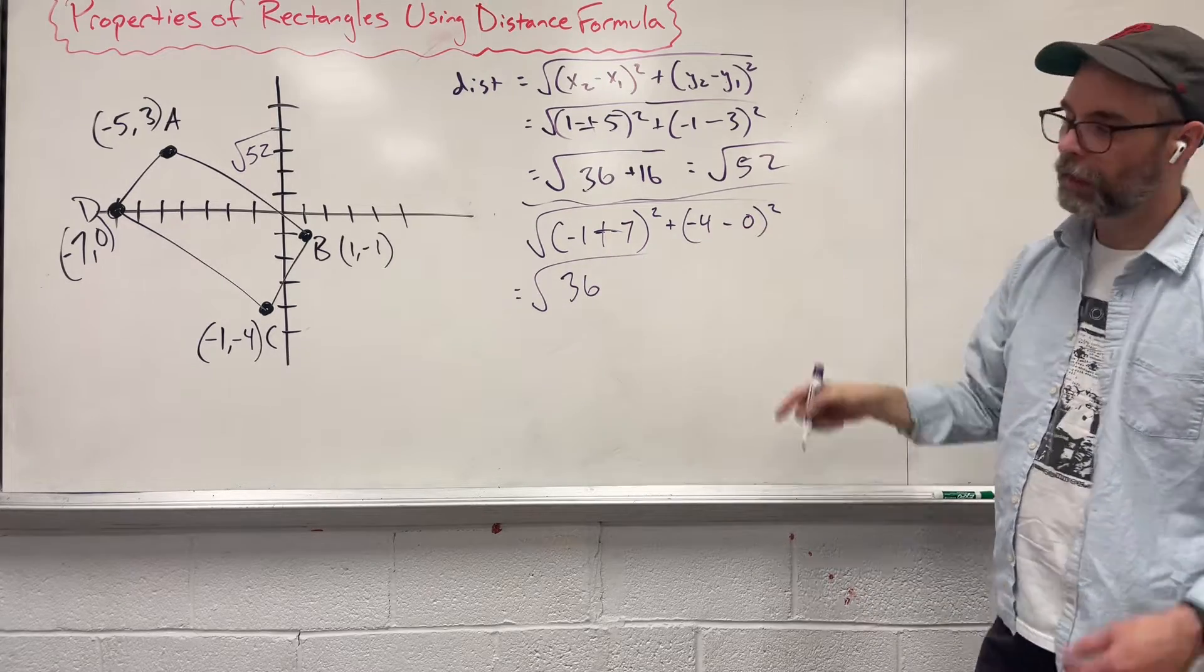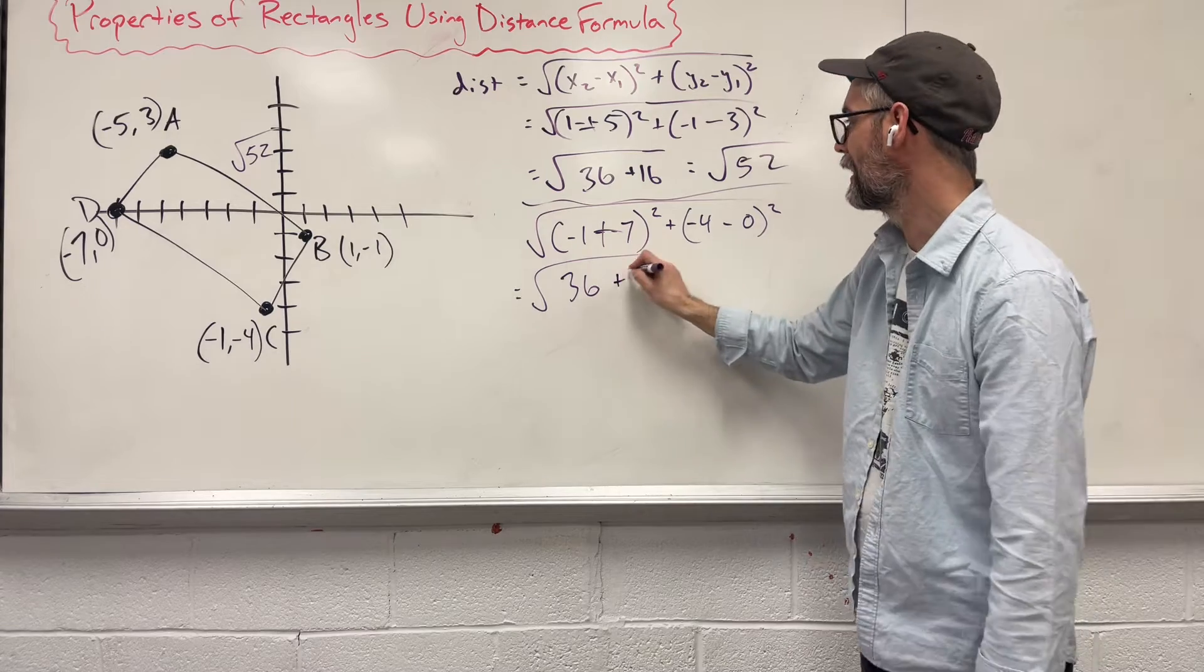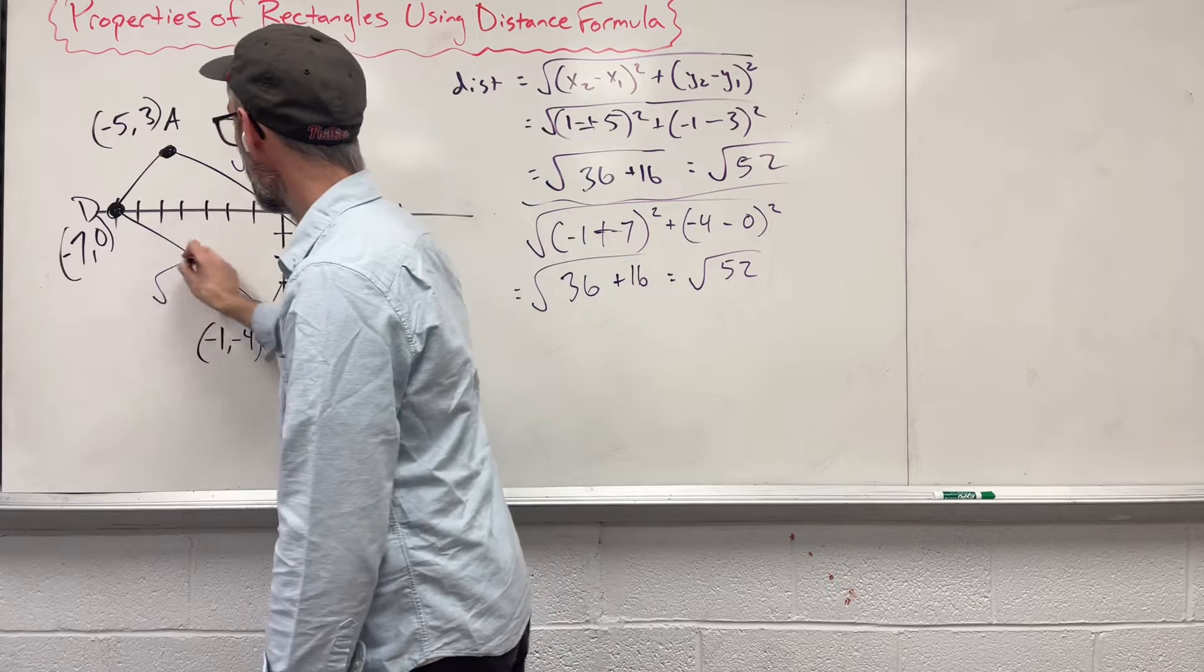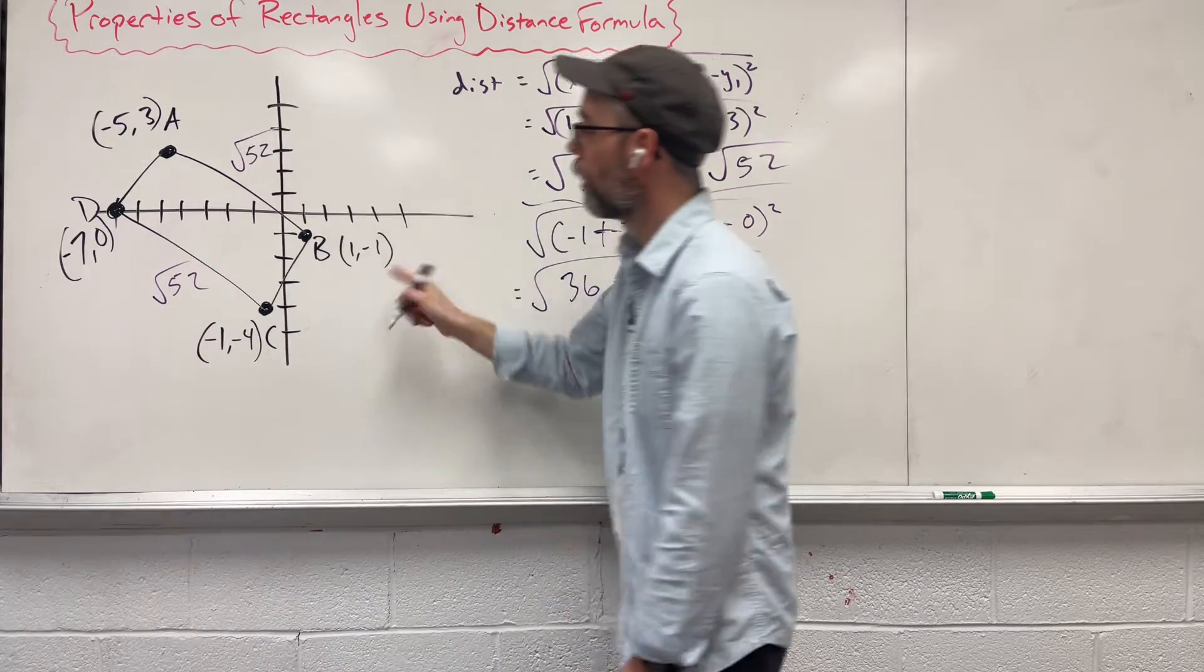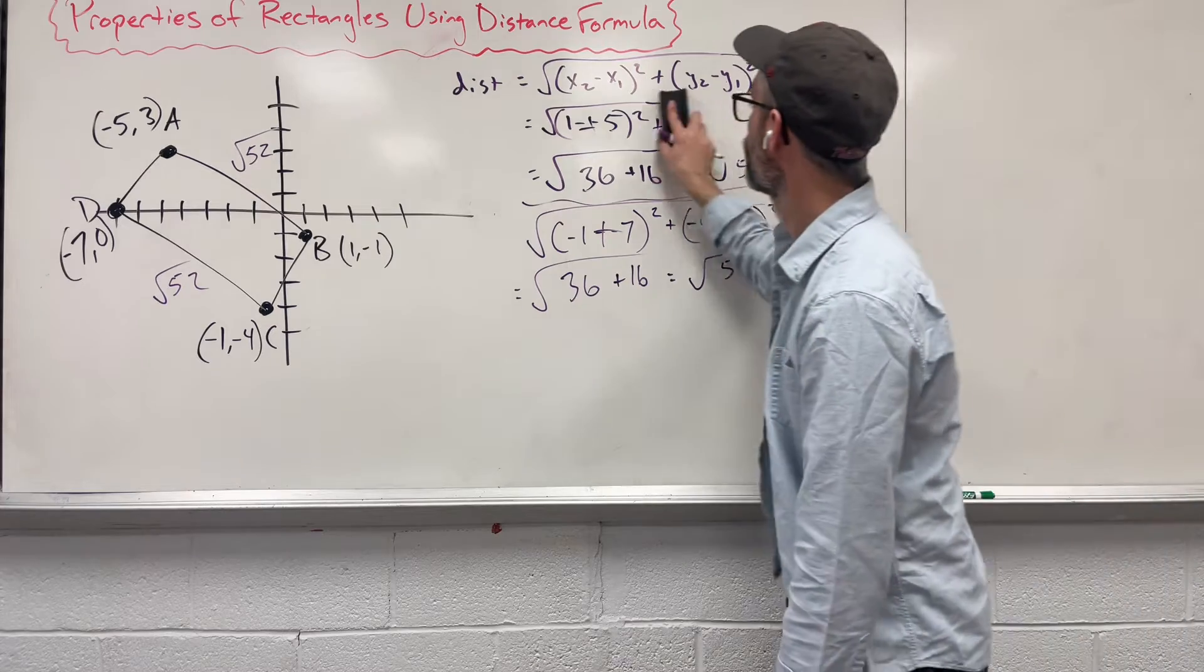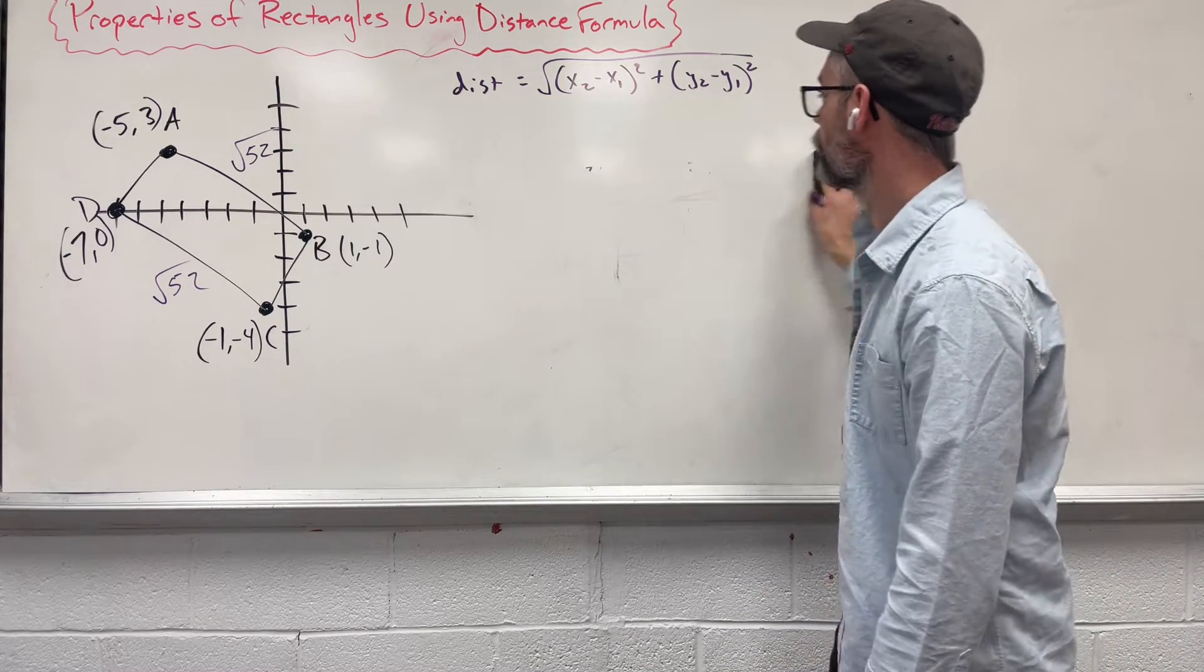This is just negative 4. Negative 4 times negative 4 is 16. And that's good. We also have the same thing. Alright, we need to keep going. So our two smaller sides, our two smaller sides.